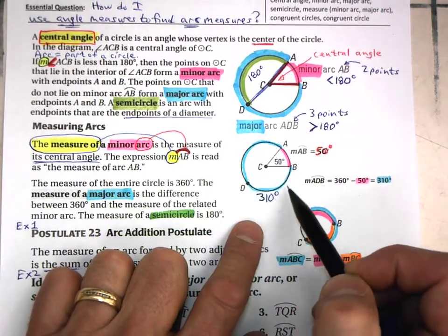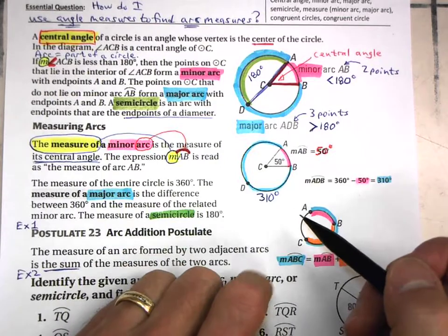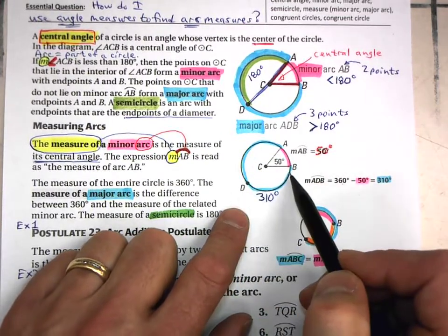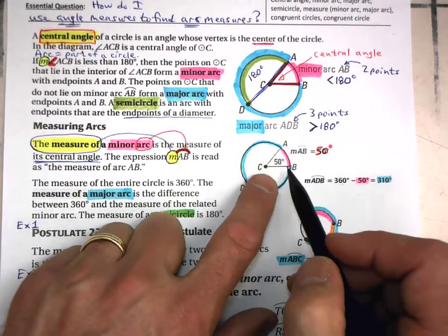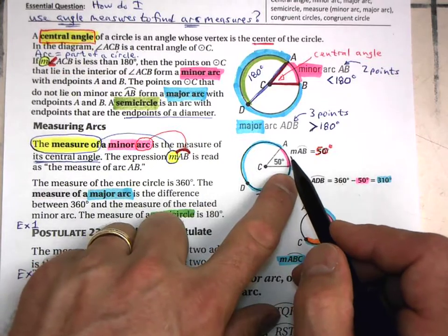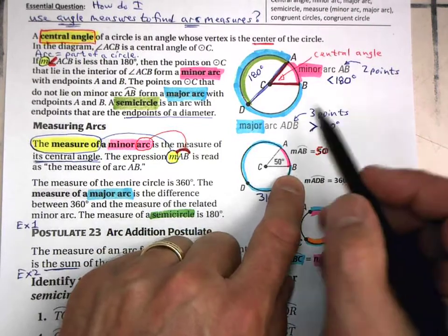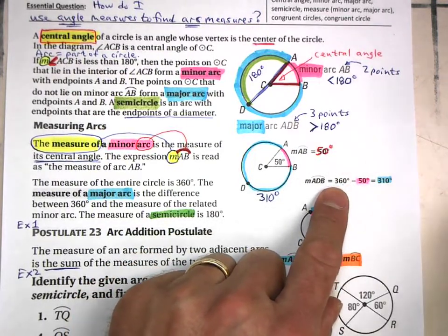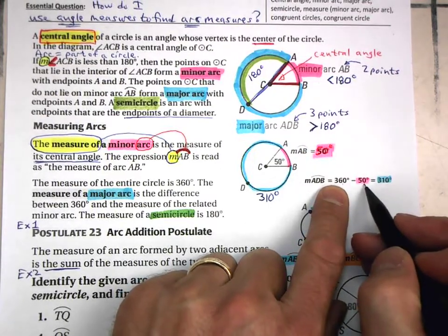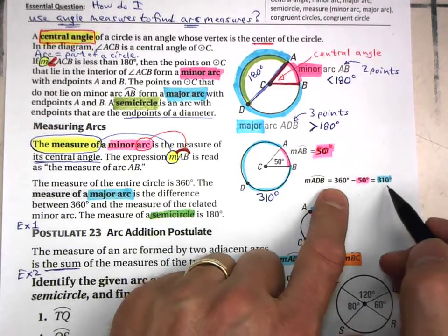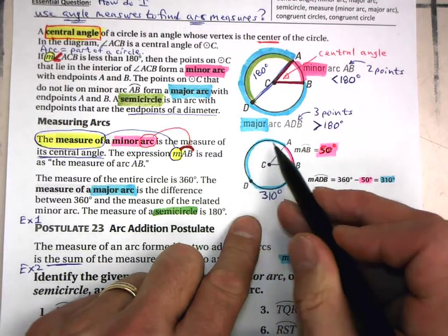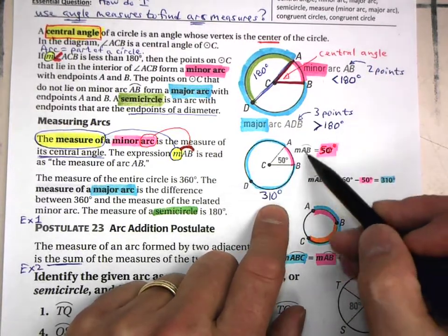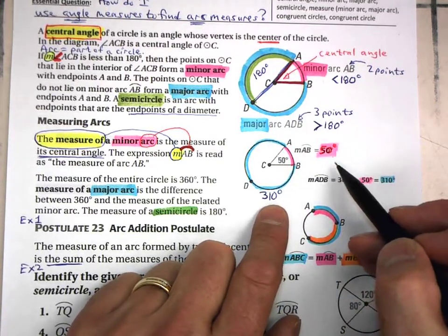What if I want the measure of the major arc going all the way around? You take 360 and subtract the minor arc from it. So if I want this major arc, I look at the measure of the minor arc — that one is 50 degrees. I know it's 360 degrees all the way around a circle, so I take out the 50 degrees from that. What I'm left with, 310 in this particular case, is the measure of the major arc. You can double-check your work by making sure that all the arcs all the way around a circle add up to 360 degrees.